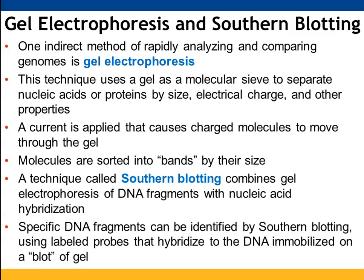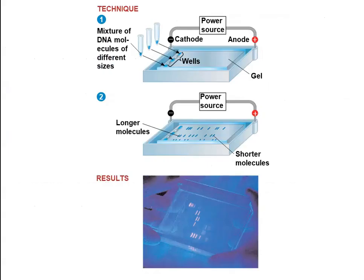With Southern blotting, the DNA fragments are immobilized on the gel, making it easier to identify which specific piece is the one of interest. DNA molecules are placed in wells, with larger molecules near the top and smaller ones toward the bottom. A staining chemical — either fluorescent or ethidium bromide — binds to the DNA pieces so they can be visualized under a light source.